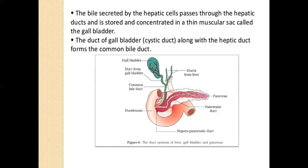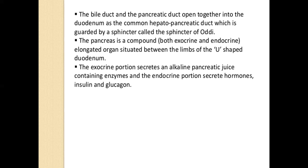The bile juice comes from the hepatic cell. The bile juice is the structural and functional unit's product. The bile duct is the pancreatic duct — this is the bile duct joining the pancreatic duct.